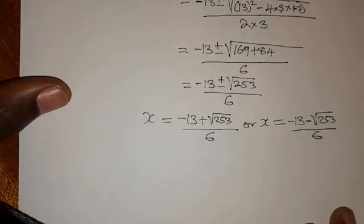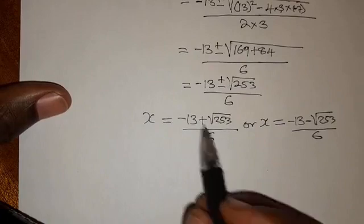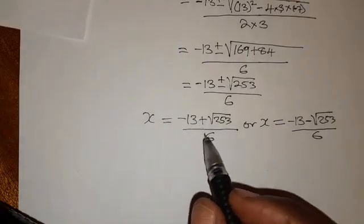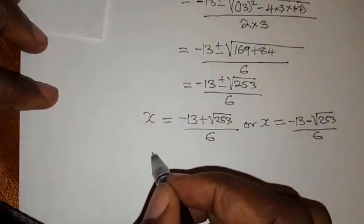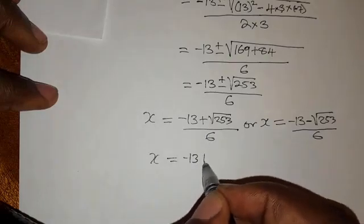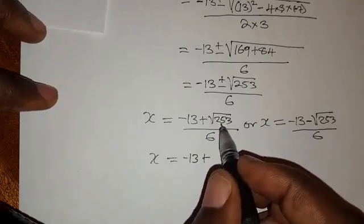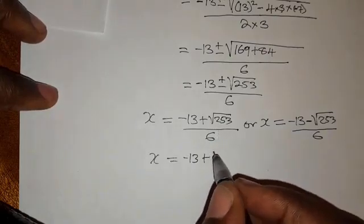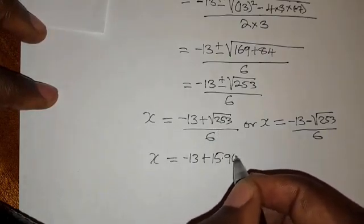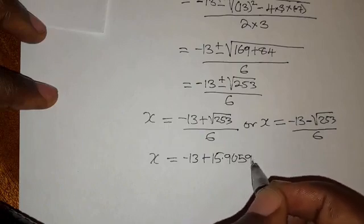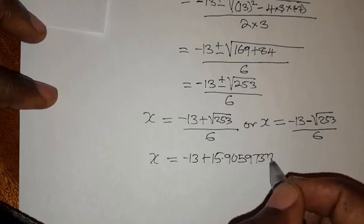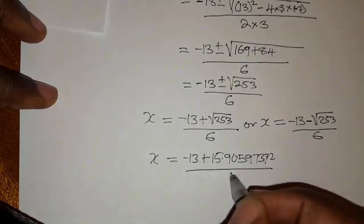So what is needed is just to simplify these equations. When we punch on the calculator, we have x equals negative 13 plus the square root of 253, which is 15.90597372, over 6.